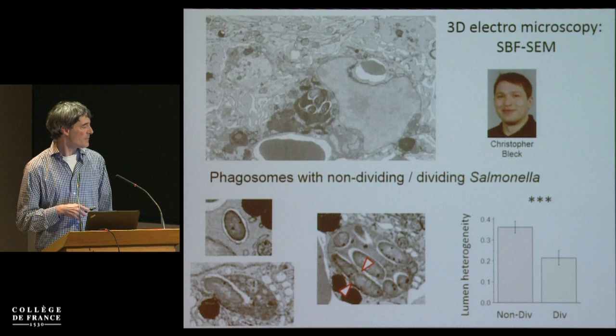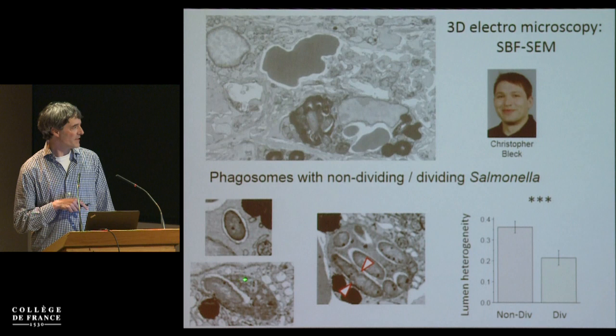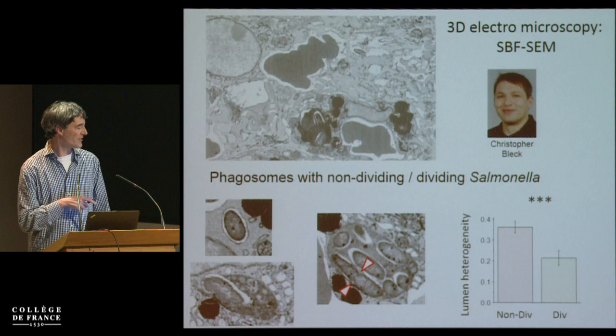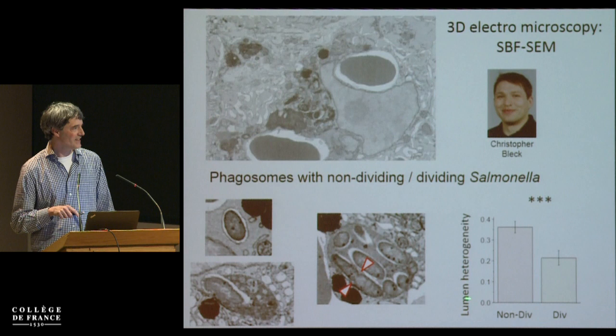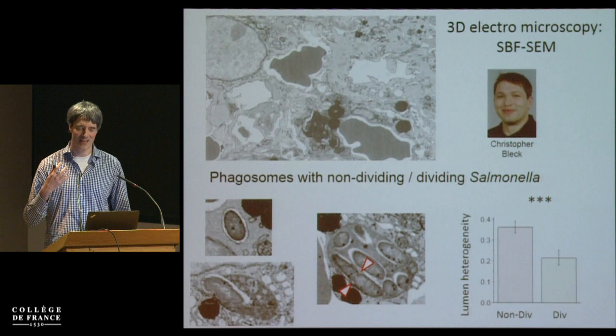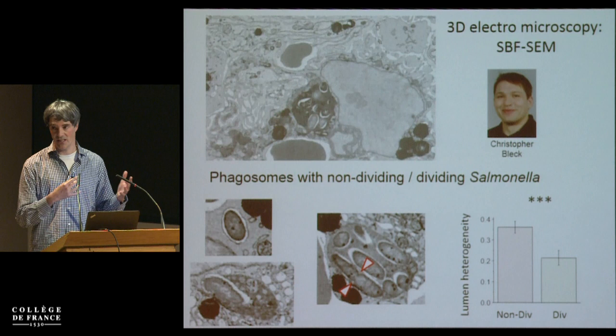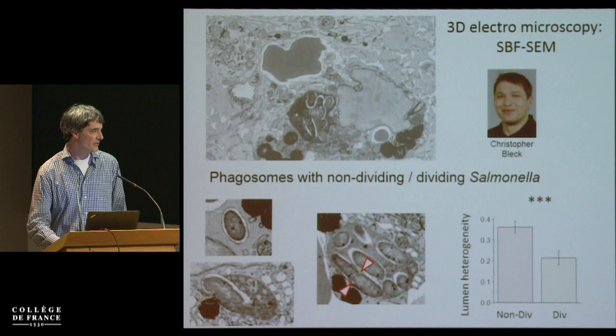Phagosomes come in different types: some have more or less homogeneous electron density, while others have lots of other stuff — sometimes mitochondria, all kinds of material. Very few phagosomes look like the little nice things in cell culture. Looking at lumen heterogeneity, phagosomes harboring dividing bacteria have much more homogeneous lumen content. My working hypothesis is that this indicates degradation of material by host enzymes, mobilizing food for consumption by bacteria. But we are not ready yet — it's clear.